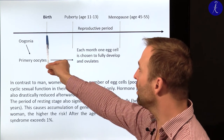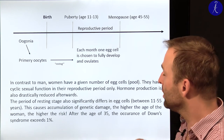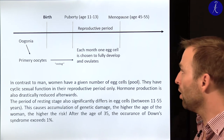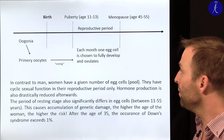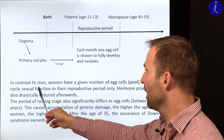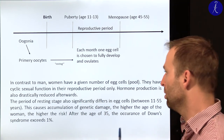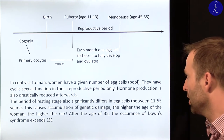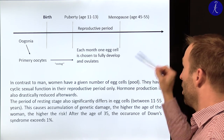These primary oocytes will enter a resting stage until they are chosen for ovulation. This ovulation requires the development of follicles; a Graafian follicle can be ovulated. The important thing here is that in contrast to men, women have only a given number of egg cells — an egg cell pool. They have a cyclic sexual function present only in the reproductive period, and hormone production is drastically reduced afterwards with no chance of having children after menopause.